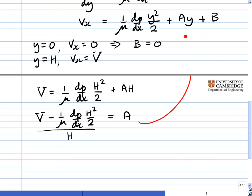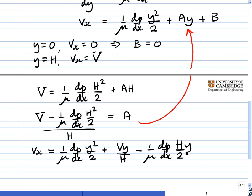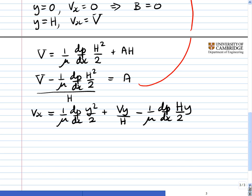Now we substitute this value of A into the expression for V. It starts off a little bit ugly but then simplifies greatly. We get Vx = 1/μ dp/dx y²/2 plus Vy/H - 1/μ dp/dx H²/H divided by 2 multiplied by y. Gathering together the terms in 1/μ, we get Vx = 1/μ dp/dx (y² - Hy)/2 + Vy/H.